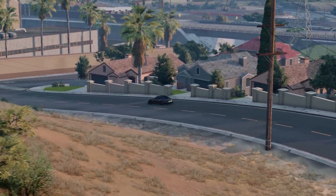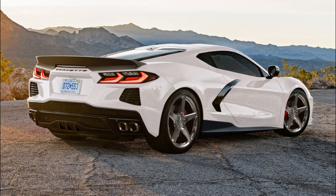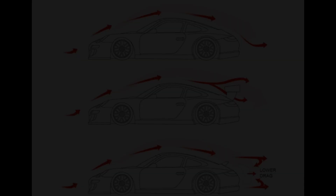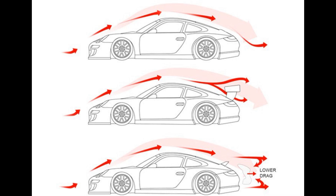So let's understand once and for all: this is a spoiler, and this is an anti-wing. A spoiler is a device installed on a car in a way that stops the air from flowing smoothly around the vehicle. The spoiler should be very close to the car body. The main purpose of the spoiler is to reduce aerodynamic drag by redirecting the airflow around the car — or in other words, to spoil the air.